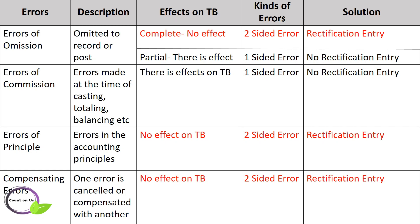Look at errors of omission. When a transaction is omitted or missed to be entered in the journal or omitted to be posted to the ledger, it is an error of omission. It may be two types: complete omission and partial omission. For example, a credit sale is omitted to be entered in the sales account — that is complete omission. The errors which are committed are entered in two accounts and do not affect the trial balance.